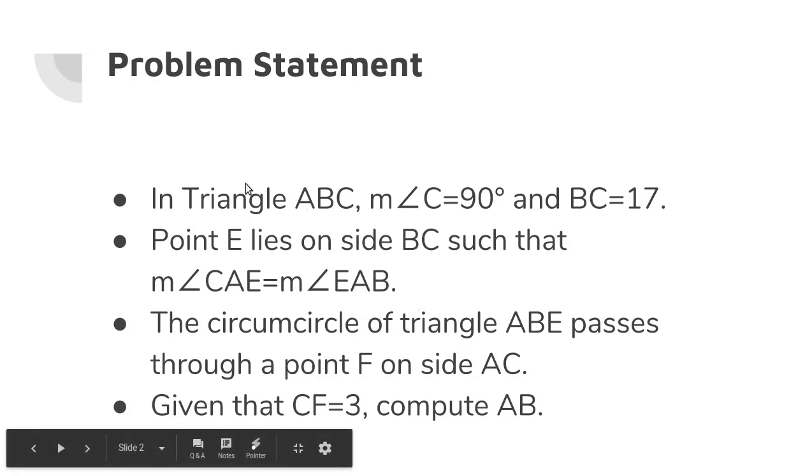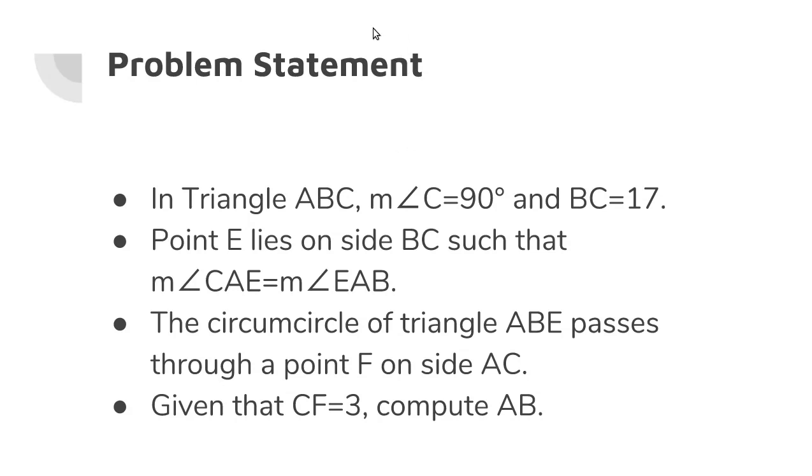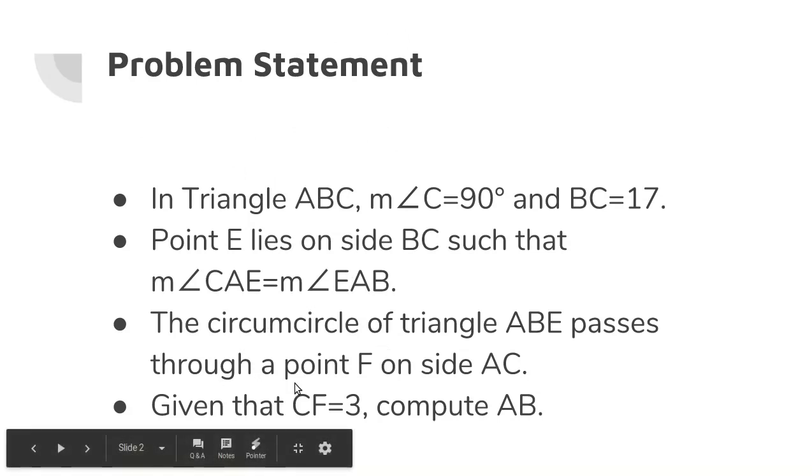And then the circumcircle of triangle ABE passes through a point F on AC. So remember, ABE is some triangle, and the circumcircle is the circle that goes around all the vertices of that triangle. So the circle will go through A, B, E, and then it'll intersect AC at some point F. Now, given that CF equals 3, try to find AB.